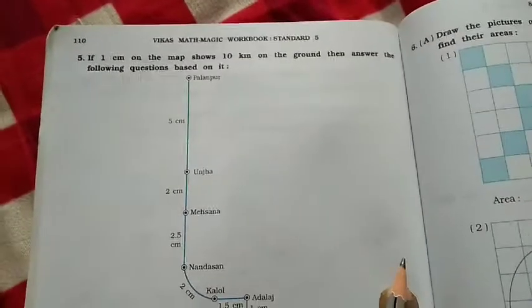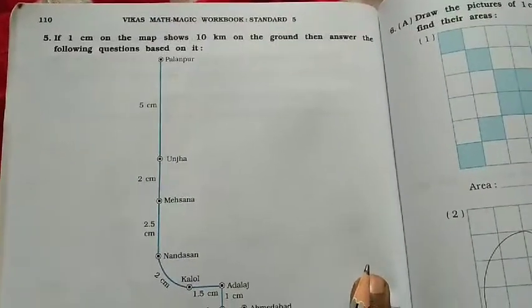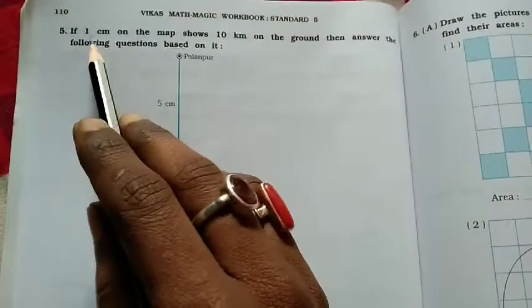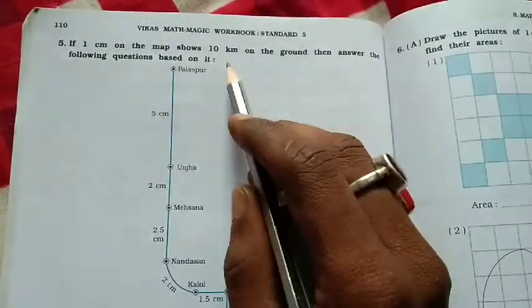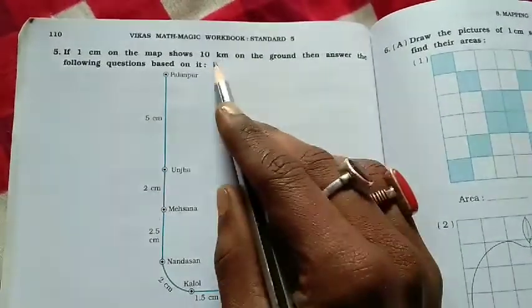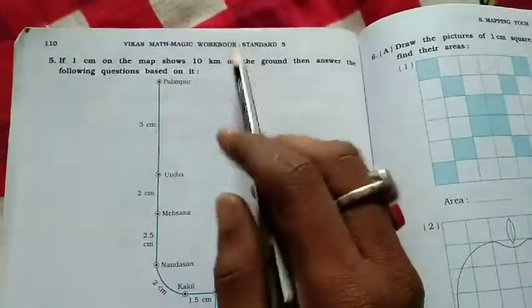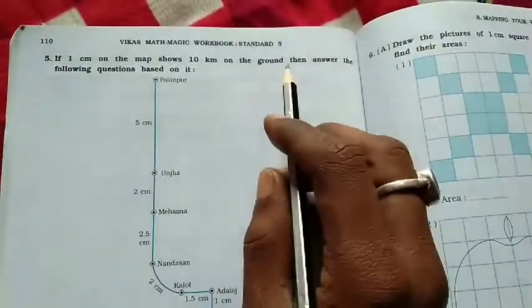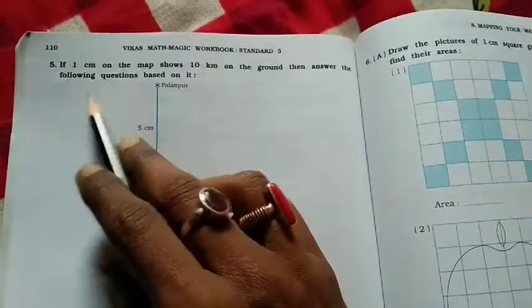Class, now we are discussing question number 5 on page 110 of fifth standard. Let's start the question. If one centimeter on the map shows 10 kilometers on the ground, then answer the following questions based on it.